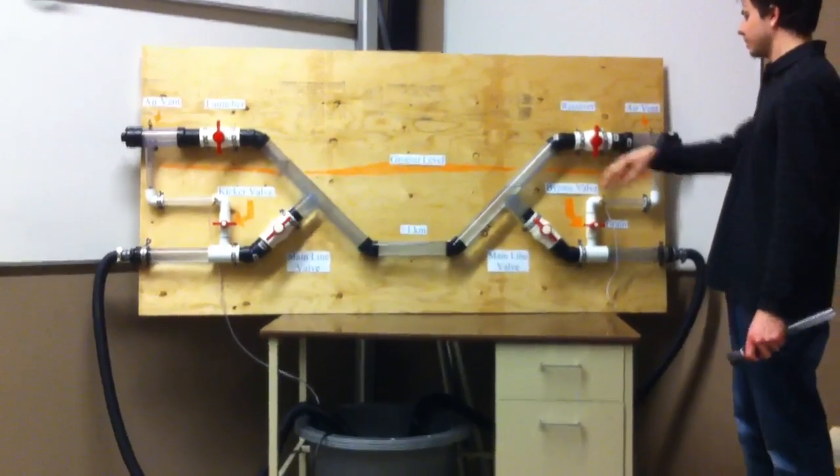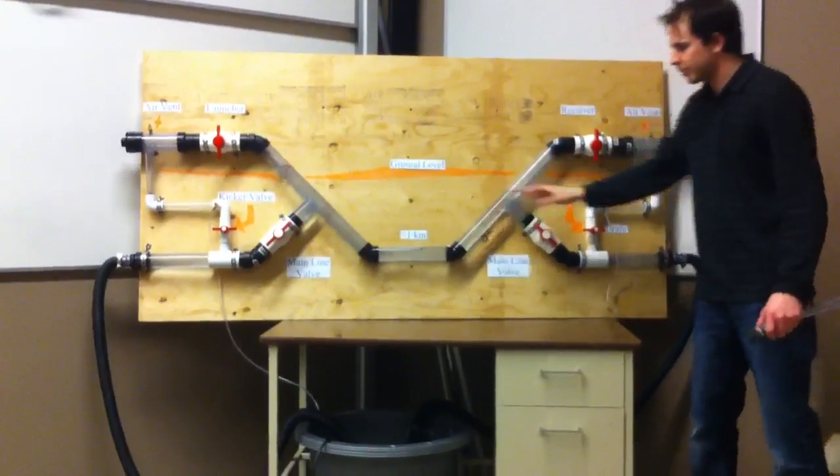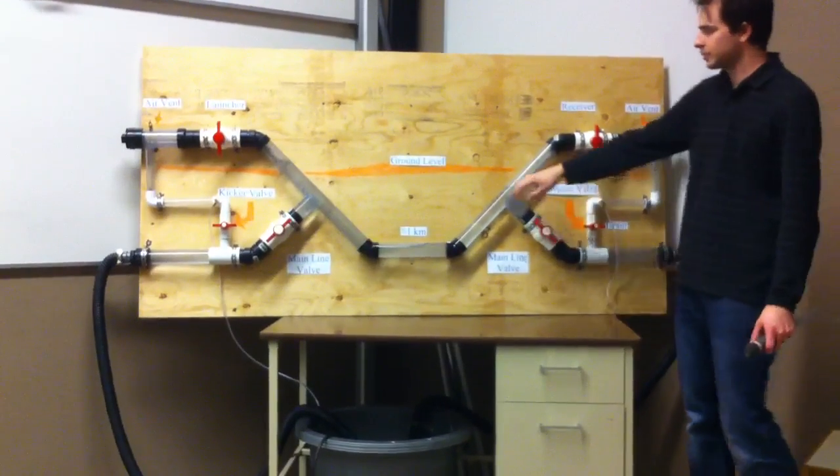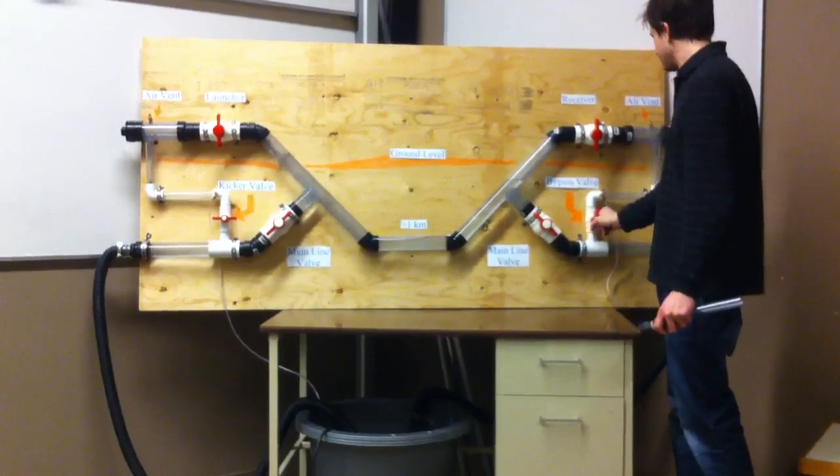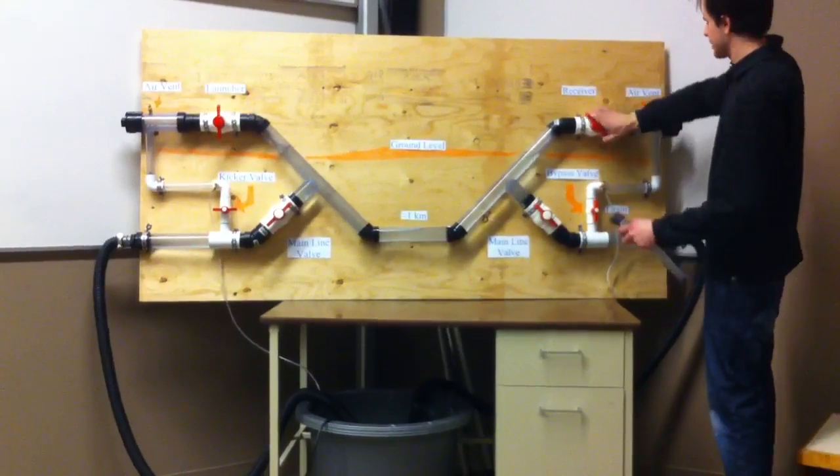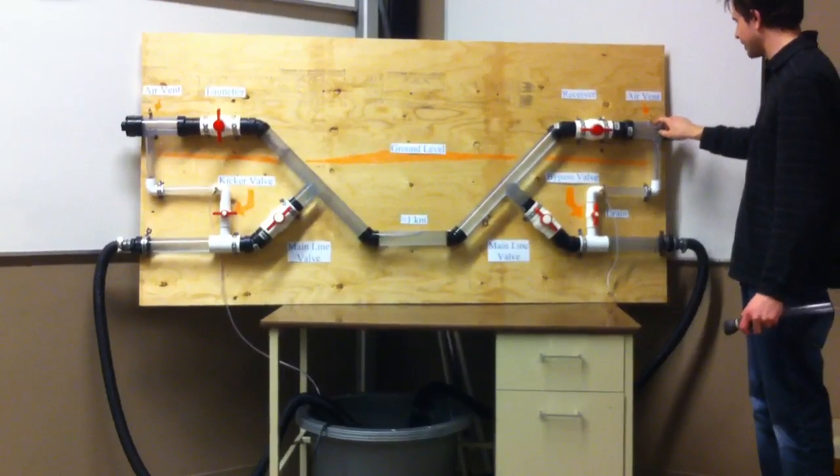So basically what I want to do is throw the flow from our main pipeline to go through our receiver. First of all, I'll just open these valves so that the water will flow in here. This is the air vent, just to let it fill up.